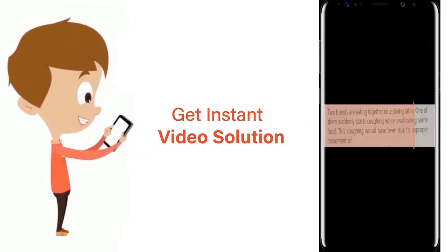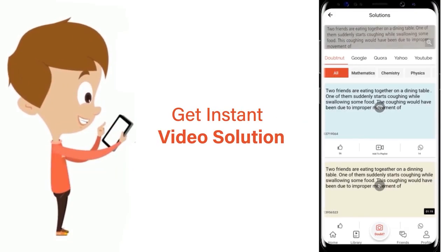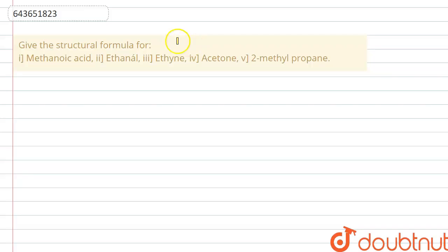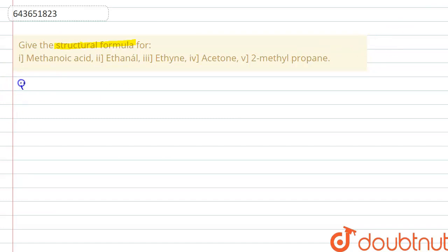The question is: give structural formulas for metanoic acid, ethanal, ethine, acetone, and 2-methylpropane. In this question, they have given us the IUPAC names and common names of some compounds and we have to write their structural formulas.